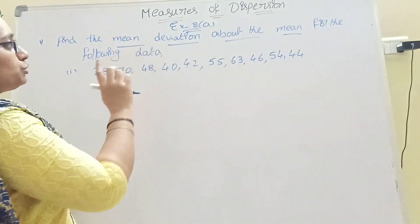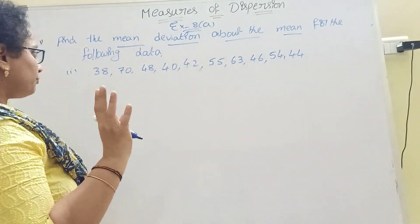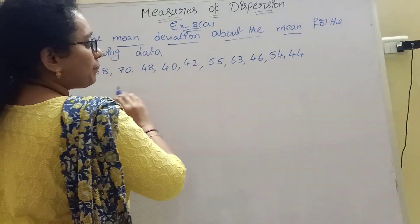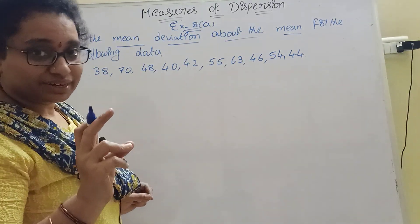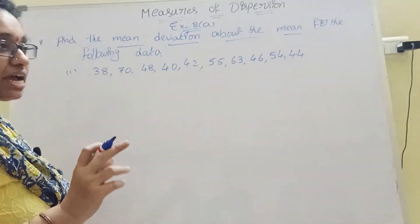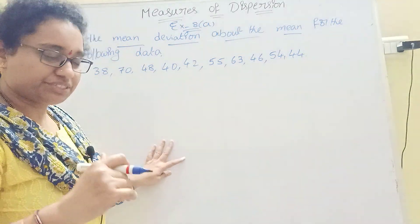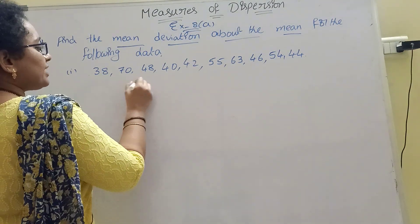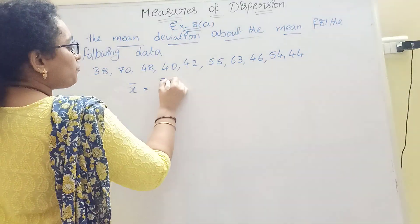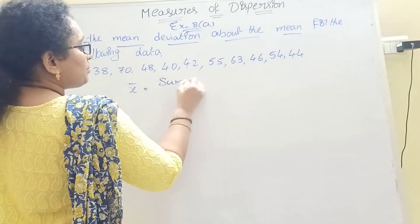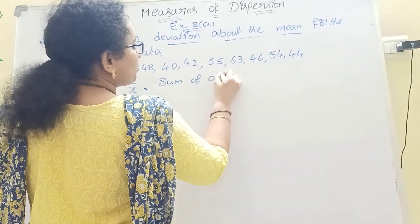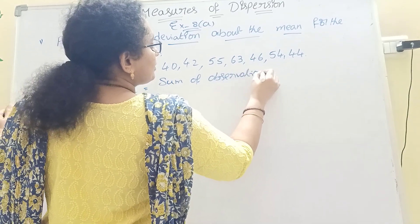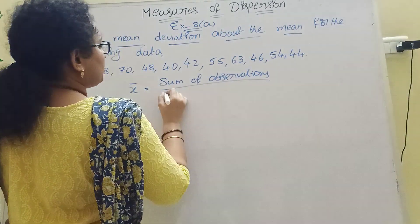There are three steps to follow. First, you should find the mean. What is the mean formula? Sum of observations divided by number of observations. So X̄ = Σxi / n.